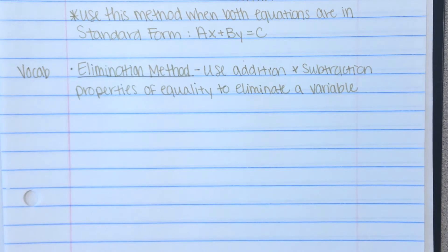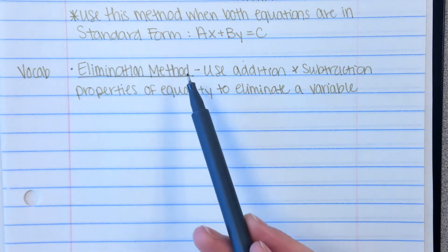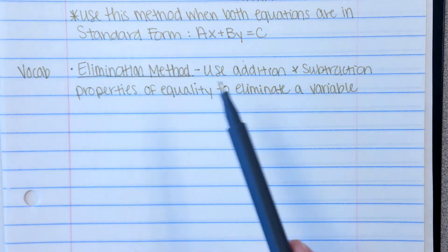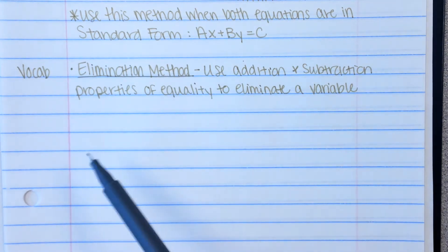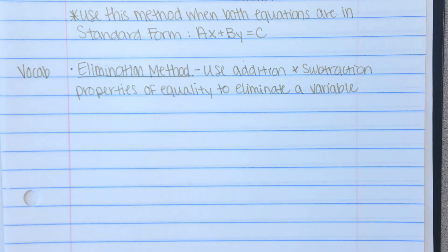We have one vocabulary term for this lesson: the elimination method. The elimination method says use the addition and subtraction properties of equality to eliminate a variable. When we did substitution, our goal was to get rid of one variable by substituting in something else. Today our goal is to get rid of one variable by using addition and subtraction.